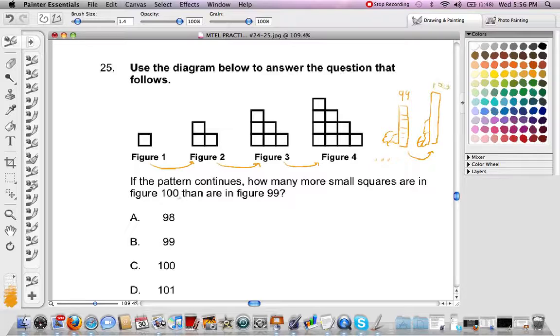Because it's asking us, if the pattern continues, how many more small squares are in 100 than in 99? So we're going to try and find out what this x is. How many more are in 100 than 99? So let's start with this pattern.